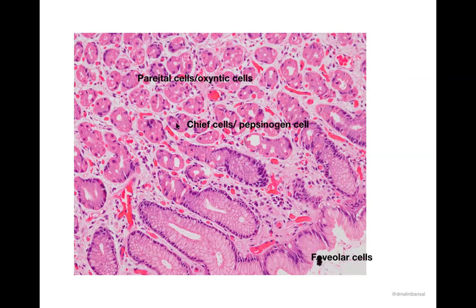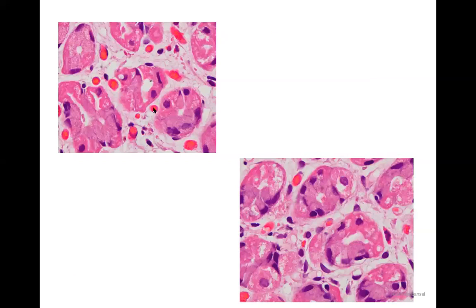Beneath the foveolar epithelium we have gastric glands lined by two kinds of specialized cells. One is the eosinophilic cells — these are the parietal cells — and the lighter basophilic cells adjacent to them are the chief cells (also called oxyntic cells). These chief cells are responsible for the secretion of pepsinogen into the stomach, and the parietal cells are the major cells responsible for the production of acid.